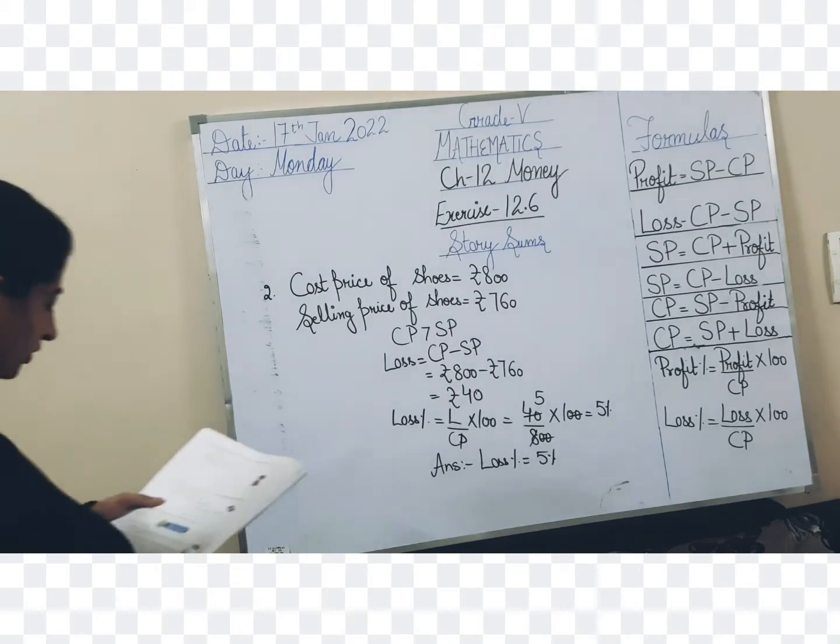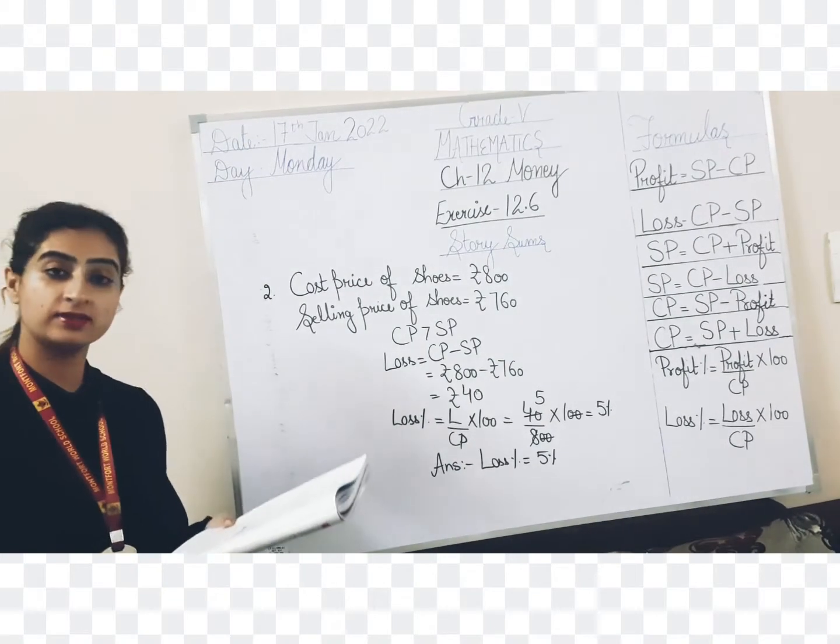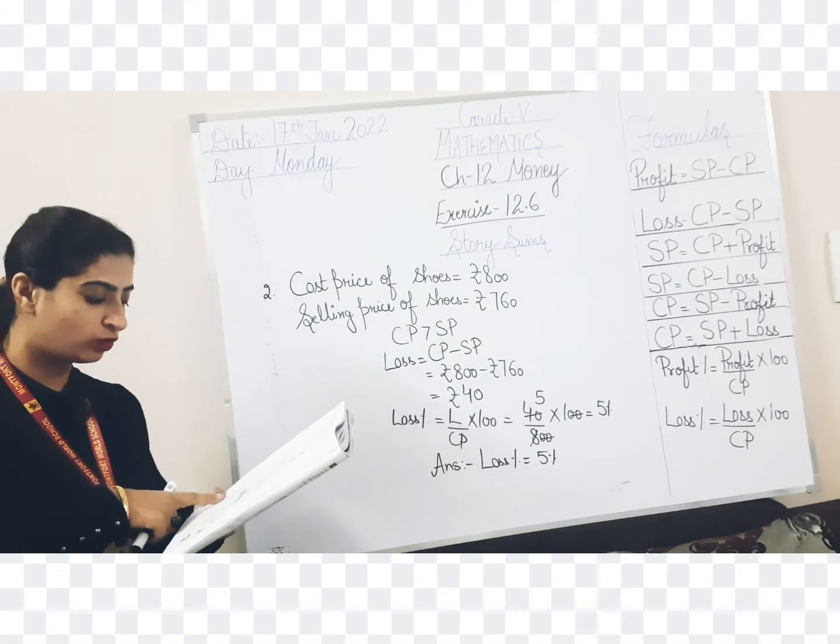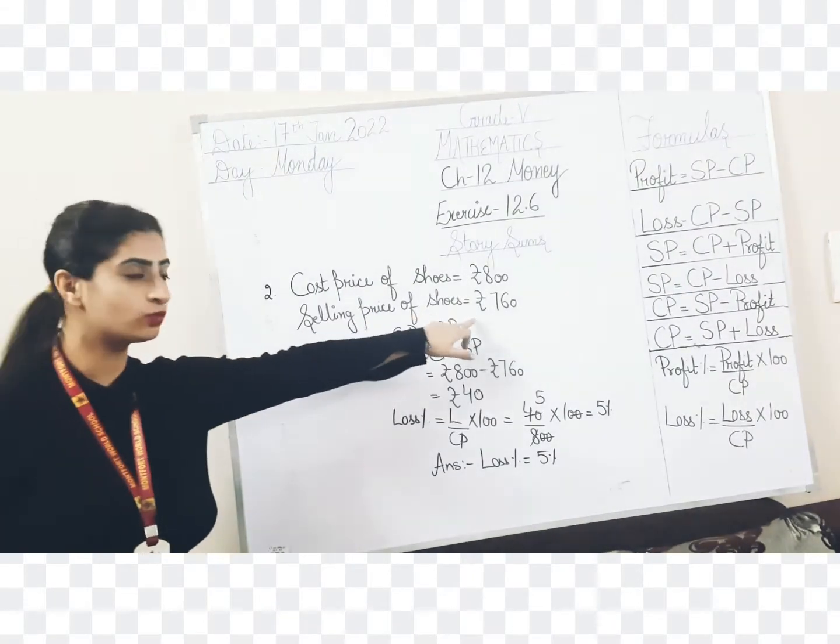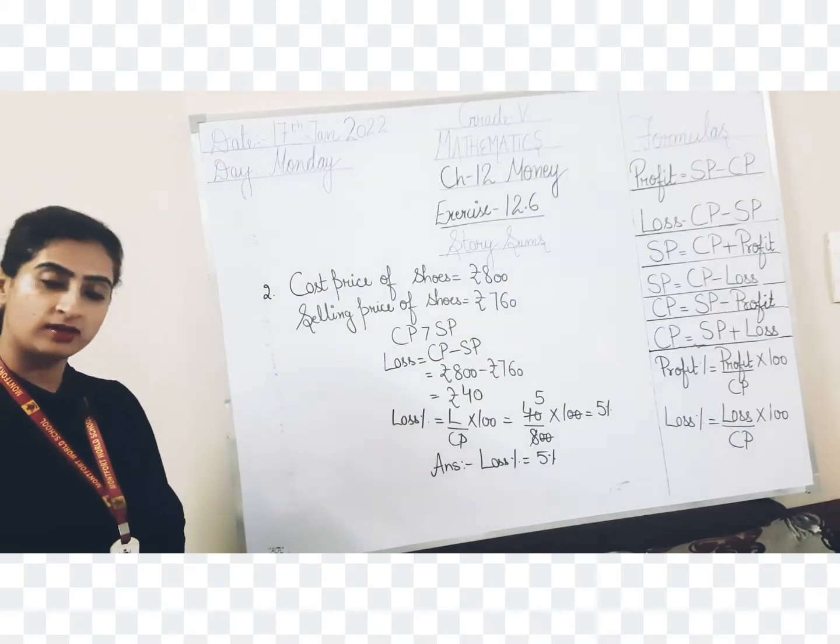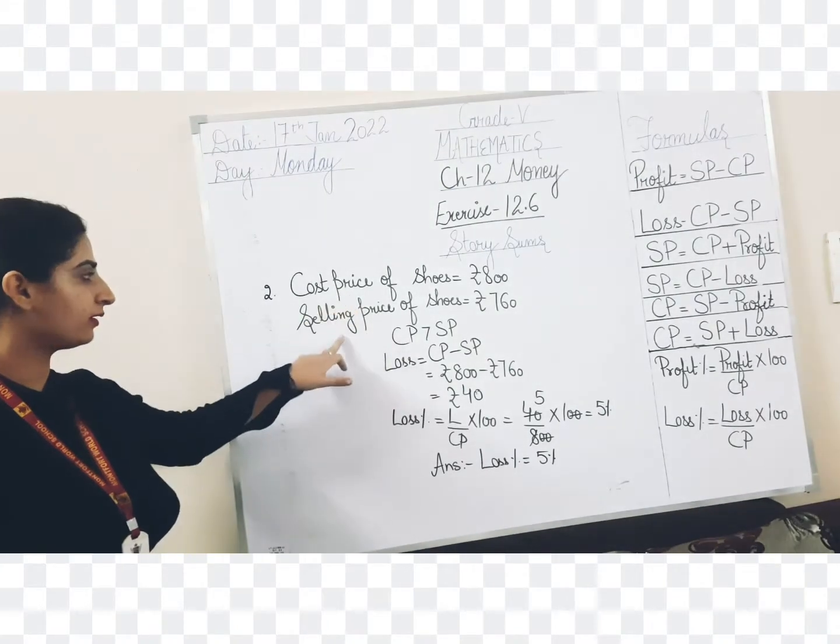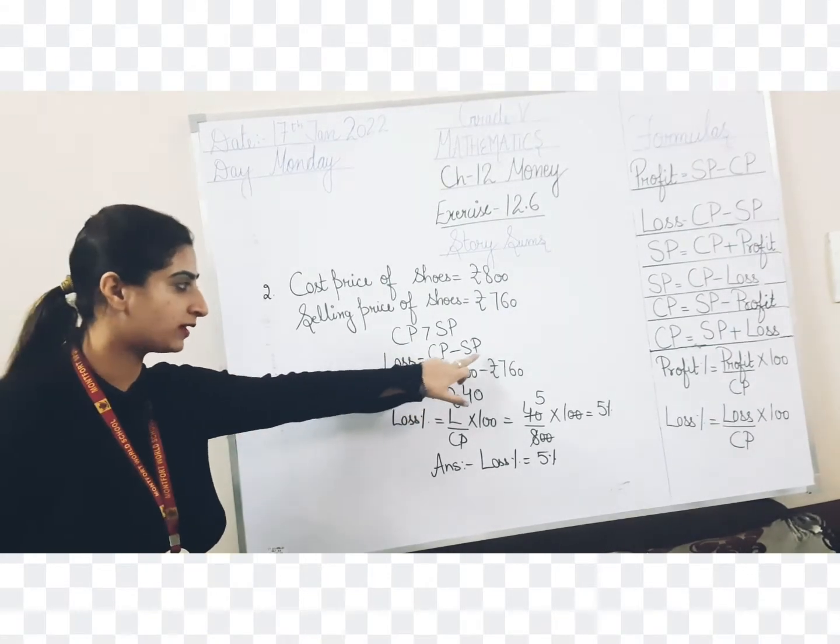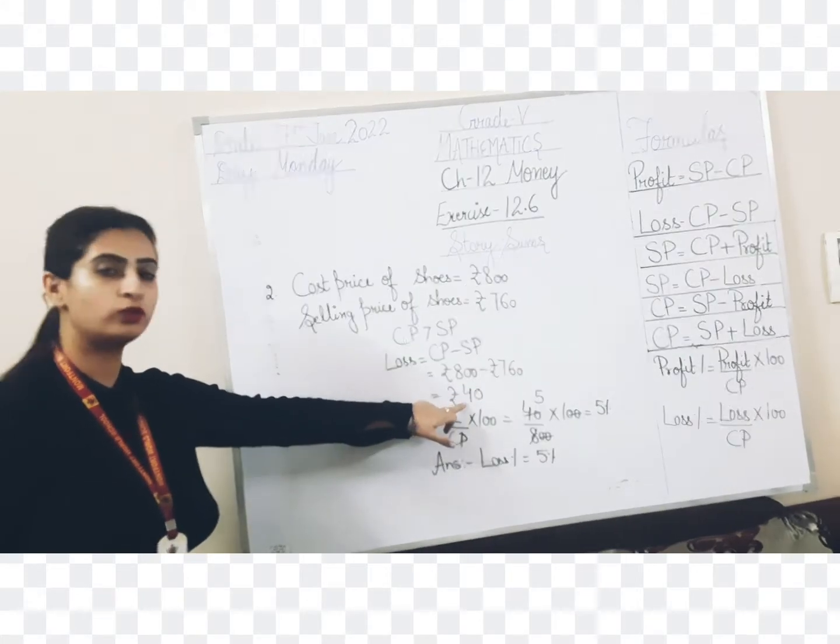The next question is: a pair of shoes costing rupees 800 was sold at rupees 760. Find the loss percent. Now here what is the cost price of shoes? That is rupees 800. And what is the selling price of shoes? That is rupees 760. You need to find out loss or gain percent. Here it is clearly written loss percent. Compare cost price and selling price. Cost price is more. So loss will be cost price minus selling price. That is 800 minus 760, comes out to be rupees 40.